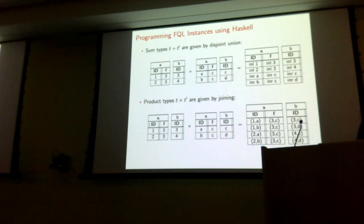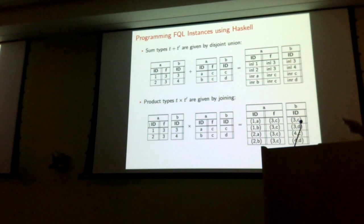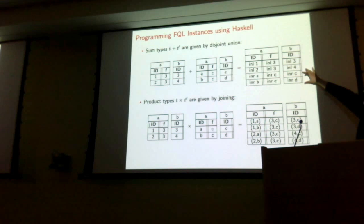Sum types are given by disjoint union of instances. Here we have IDs 1, 2, 3, 4 from the left table, and A, B, C from the right. You can see the values are tagged with left or right depending on where they came from — the left table is the top two, the right table is the bottom two, giving you the union.